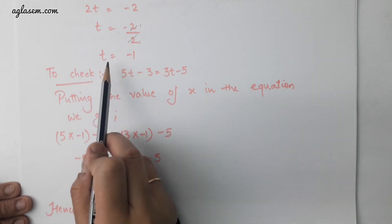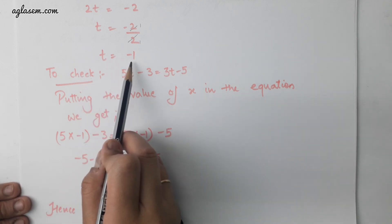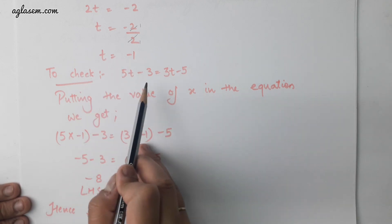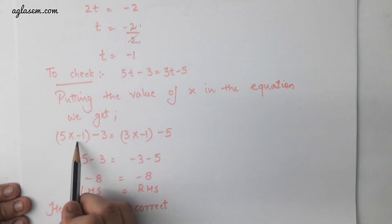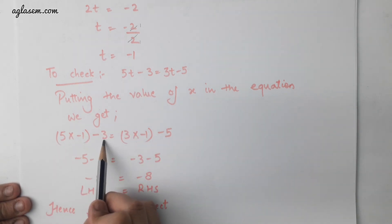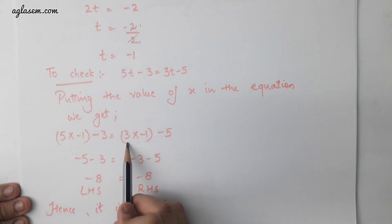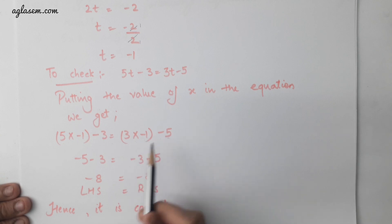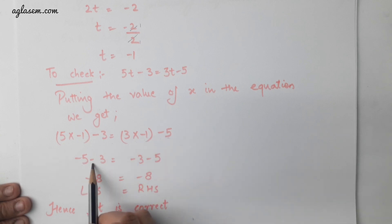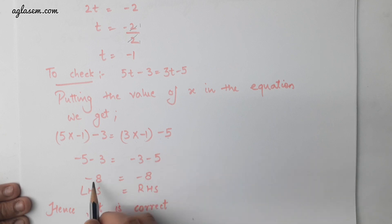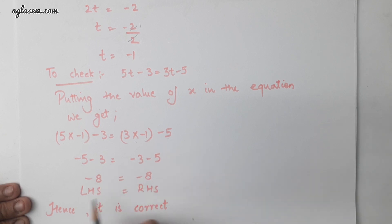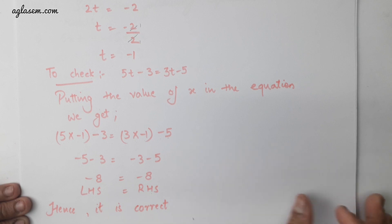To check, we will put t equals to minus 1 in the given equation. We get 5 into minus 1 minus 3 equals to 3 into minus 1 minus 5. Minus 5 minus 3 is equal to minus 3 minus 5, so minus 8 is equal to minus 8. LHS is equal to RHS and hence it is correct.